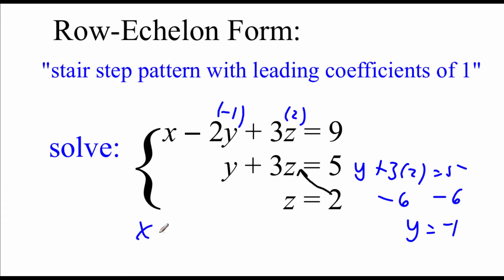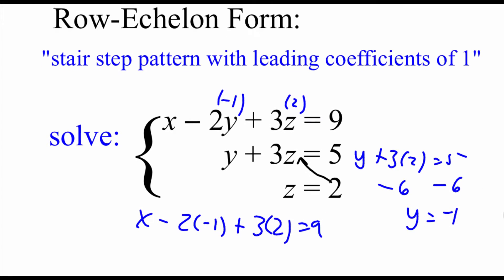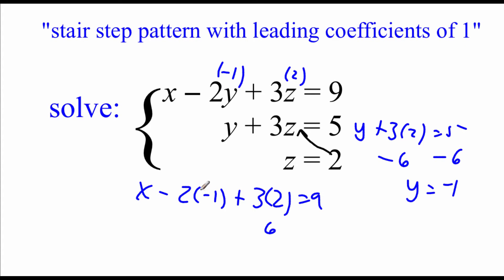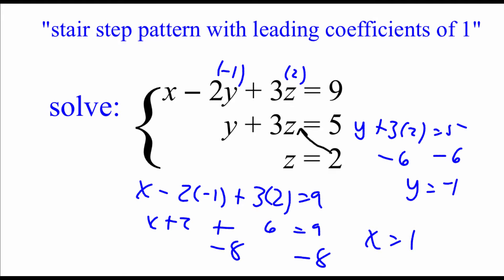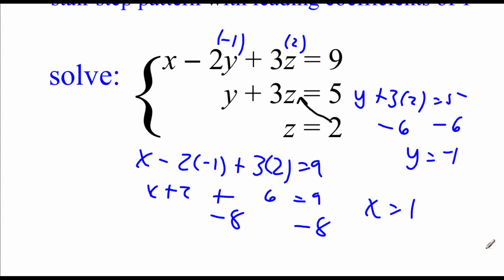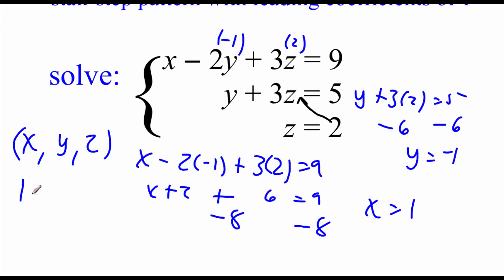Now we've got two variable values to plug into our top equation. Our z value is 2 and our y value was negative 1. So our top equation would say x minus 2 times negative 1 plus 3 times 2 equals 9. 3 times 2 is 6, and negative 2 times negative 1 is positive 2. So we get x plus 2 plus 6 equals 9. 6 plus 2 is 8, and subtracting the 8 over gives us x equals 1. Now we've got three variables, so we write an ordered triple in alphabetical order: x first, y second, z last. Our ordered triple is (1, negative 1, 2).